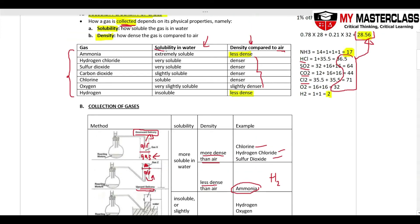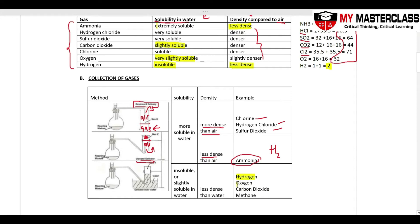For solubility: hydrogen is very insoluble in water, and carbon dioxide and oxygen are slightly soluble. Because they are slightly soluble or insoluble, we can use water displacement. In this setup, gas produced passes through the delivery tube into water — since the gases don't dissolve, they collect on top. These three gases are most commonly collected using water displacement.